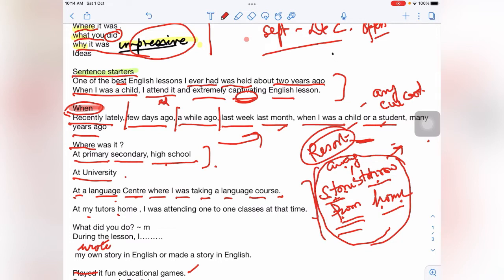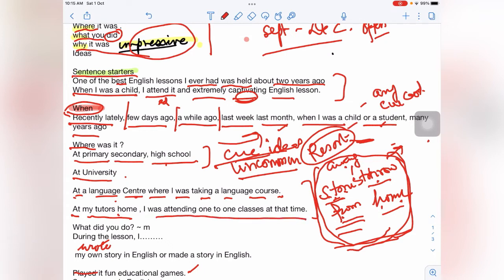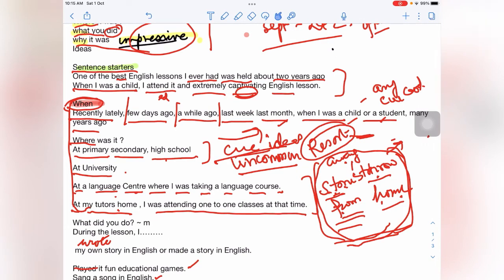This is a novel one - at a language center where I was taking a language course. That could be your IELTS center, a language center where I was taking a language course. Or you can say, here you can add an idiom, at a language center which was a stone's throw away from my house. This idiom can be used anywhere. You can fit it anywhere because there is an uncommon vocabulary. If you have not seen my cue card ideas video, you must see it. You will get a clarity how you can make a cue card yourself.